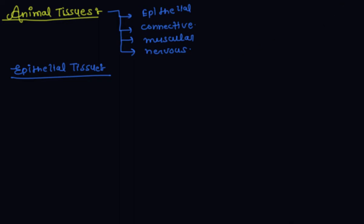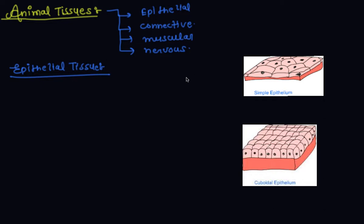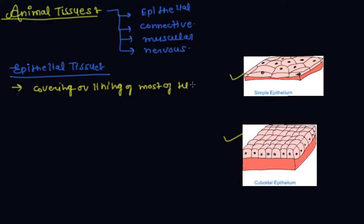In epithelial tissue, the epithelial tissue forms the covering or lining of most of the organs. If you see this diagram, this is a type of epithelial tissue — this is a simple epithelial and this is a cuboidal epithelium tissue. Epithelial tissue forms the covering or lining of most of the organs.